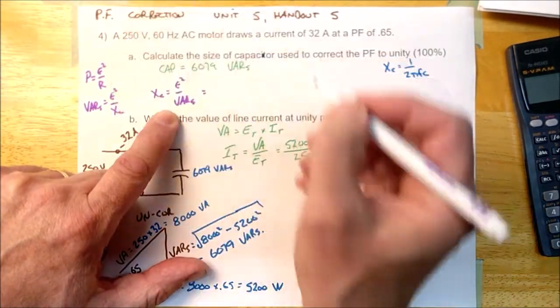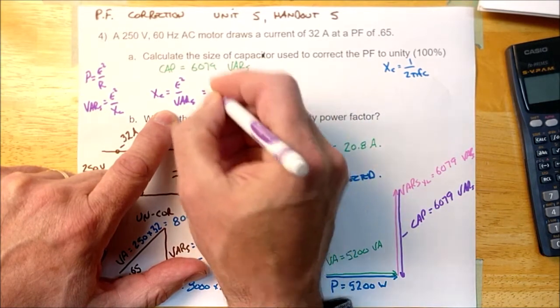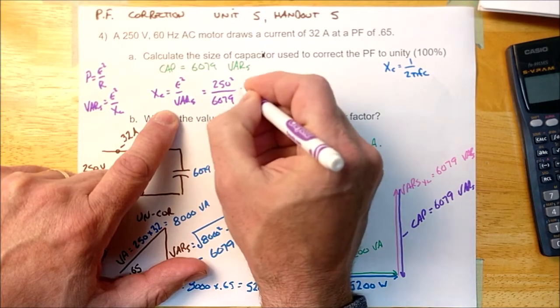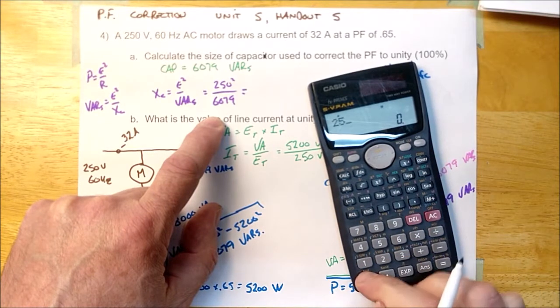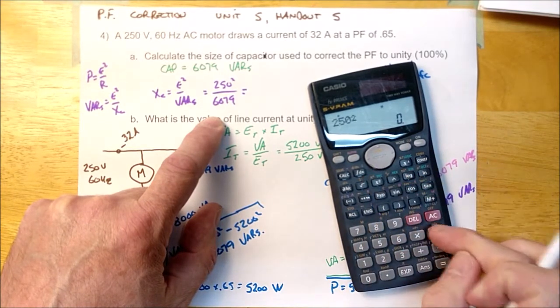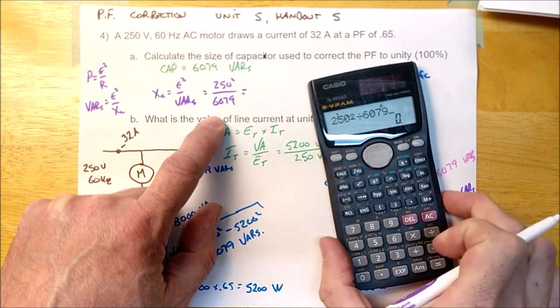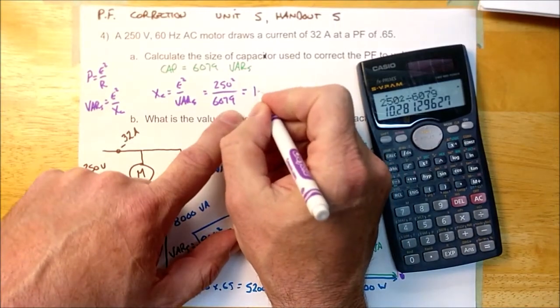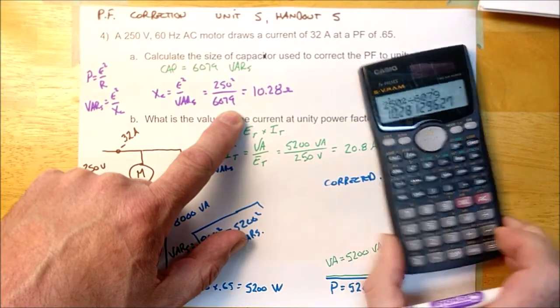Now E squared, 250. VARs is the size of the capacitor. And we're going to calculate that. 250 squared divided by 6079. Yes equals. So this capacitor is 10 ohms, 10.28 ohms.